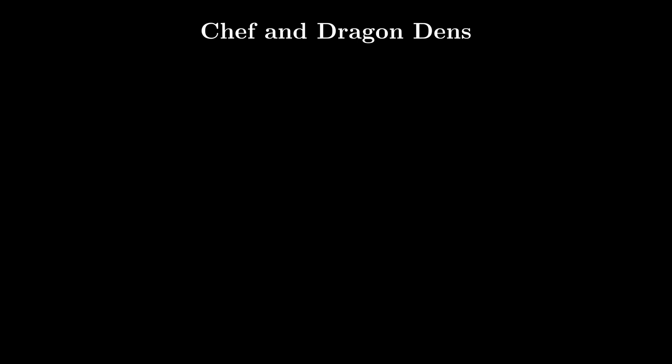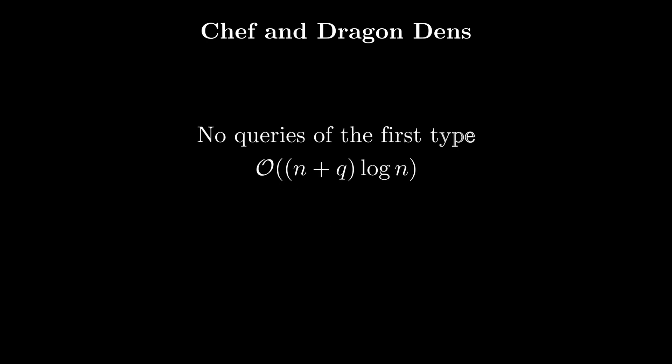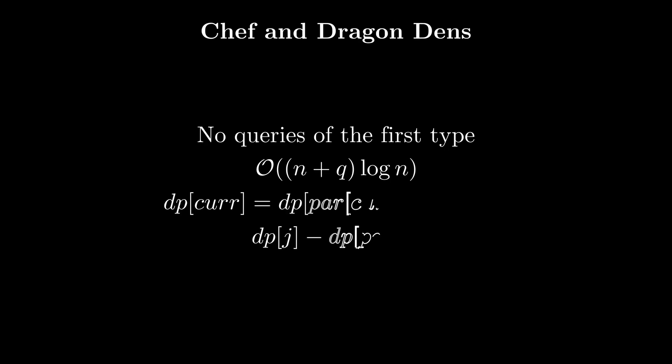Before explaining the implementation, I'll explain the subtasks. Subtask 1 has q, n ≤ 1000 and can be solved in O(qn) by scanning leftwards and rightwards from the endpoint for each query. Subtask 2 has no type-1 queries, so there are no updates. After building the trees, we can calculate a dp where dp[node] = dp[parent of node] + A[node], and the answer for all queries is dp[j] - dp[i's parent]. This is still O(q + n log n) as we need binary lifting to check ancestry.